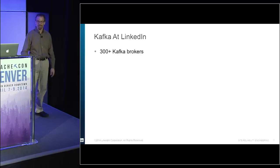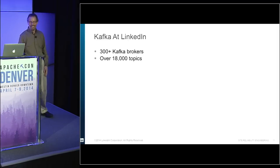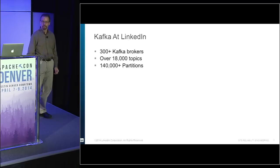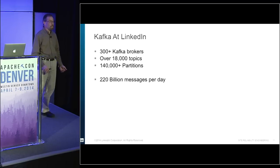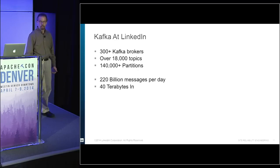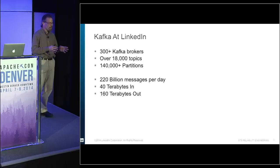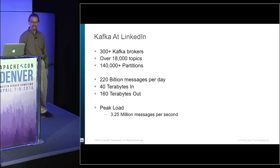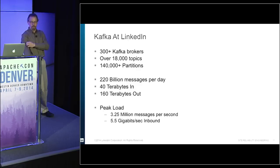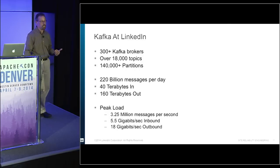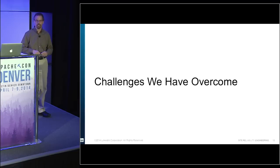How much data are we talking about? We have over 300 Kafka brokers at LinkedIn — actually low because we just deployed four new clusters last week. We have over 18,000 topics and over 140,000 partitions. On an average day we're doing 220 billion messages produced into Kafka and about 40 terabytes of data coming in, with 160 terabytes going out. At peak, we're doing 3.25 million messages per second, 5.5 gigabytes per second inbound to all clusters, and about 18 gigabits per second outbound.